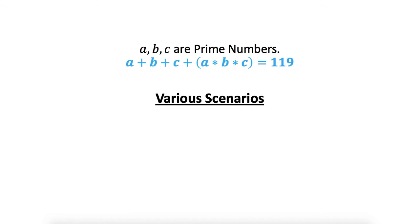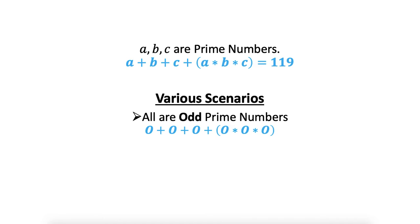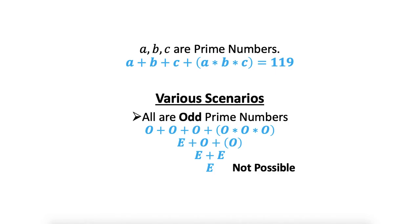Now let's consider the scenario where all three are odd: odd plus odd plus odd plus the product of all odds. Odd plus odd equals even, and the product of all odds is also odd. So we are left with even plus odd plus odd. Odd plus odd is again even, so even plus even gives an even result. But our actual answer 119 is odd, so this scenario is also not possible.